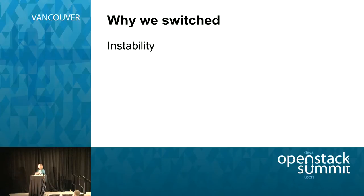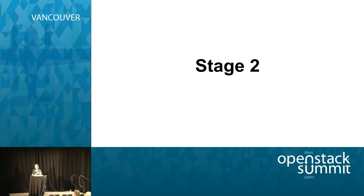The reason we decided to switch away from these command line clients was their instability. That brings us to stage two: if we don't want to use command line clients, what do we get to use? We use the APIs somehow — we bypass the command line clients and use the APIs directly.